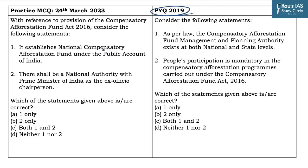The first statement says it establishes the National Compensatory Afforestation Fund under the Public Account of India. It is a correct statement as the CAMPA Act was enacted by Parliament of India to provide for the utilization of amounts realized in lieu of forest land diverted for non-forest purposes. It also establishes the National Compensatory Fund and a State Compensatory Afforestation Fund for each state. These funds will be managed and utilized by an authority constituted at national and state levels respectively. The second statement says there shall be a national authority with the Prime Minister of India as ex-officio chairperson — this is an incorrect statement because the Minister of Environment and Forest is the ex-officio chairperson, not the Prime Minister. The answer to this question becomes A, which is one only.